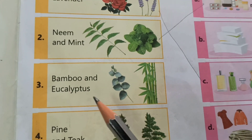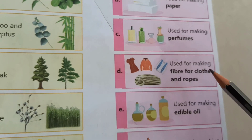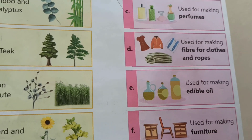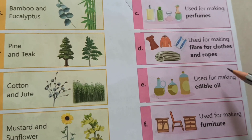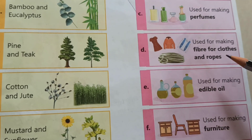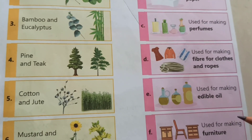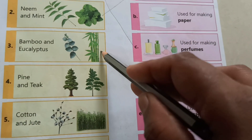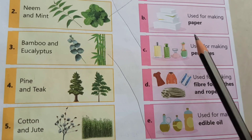Bamboo and eucalyptus — who can tell me what they are used for? Furniture, or fiber for cloths, or perfumes, or paper? Bamboo and eucalyptus are used for making paper. And pine and teak — furniture or paper?